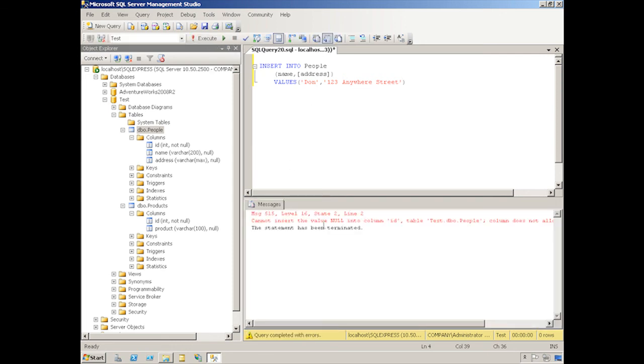We got an error and it said it cannot insert the value null into the column ID because the column does not allow nulls. So the insert failed. We can actually see that over here. It says that the ID column contains an integer and has the not null constraint applied to it. So that's what happens if you don't provide a value for a column that requires a value, but does not provide a default value.